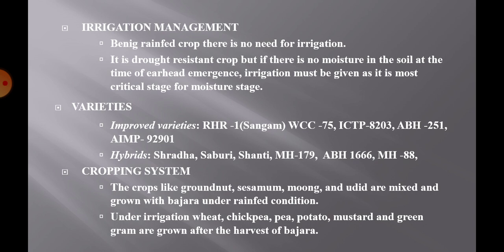Improved varieties include Sangam (RHB1), WCC75, ICTP8203, ABH251, and AIMP92901. Popular hybrids include Shraddha and Shaburi, which are most popular among farmers, as well as Shanti MH179, ABH1666, and MH88.